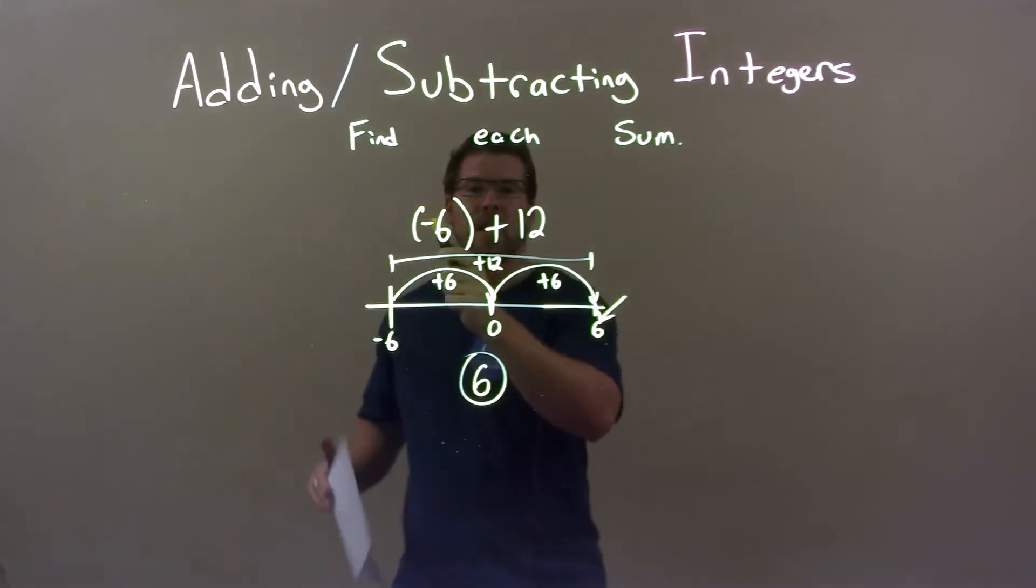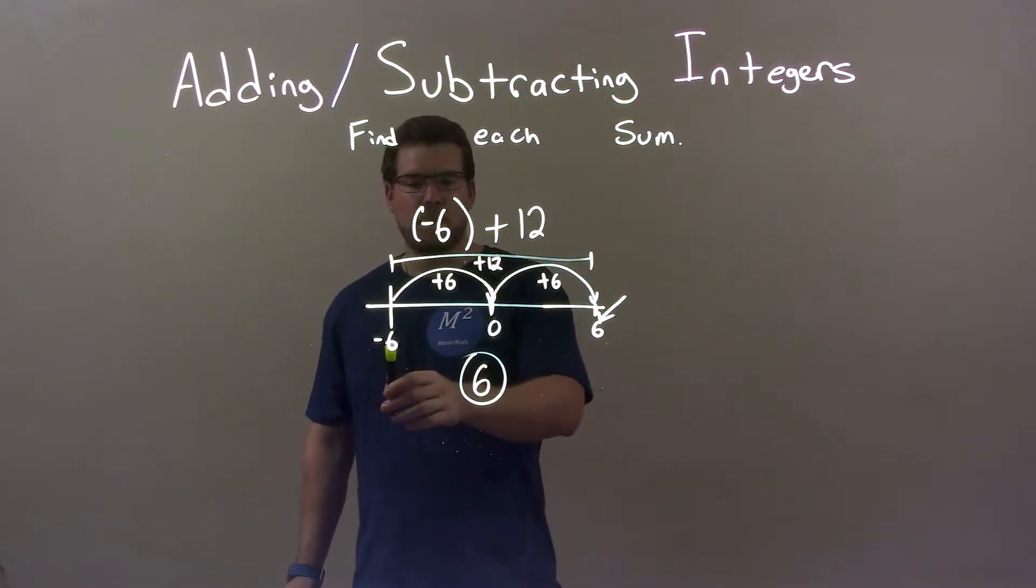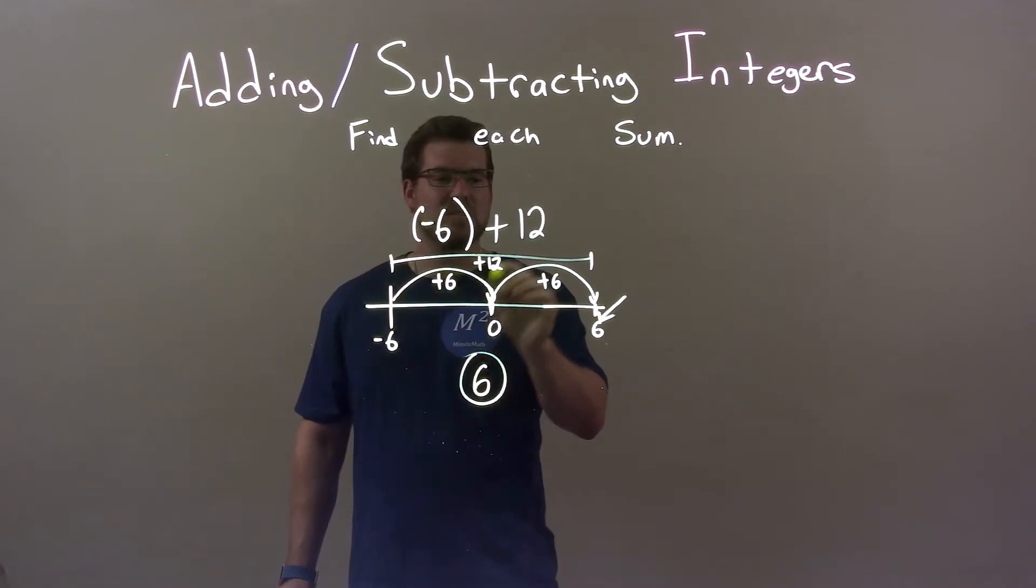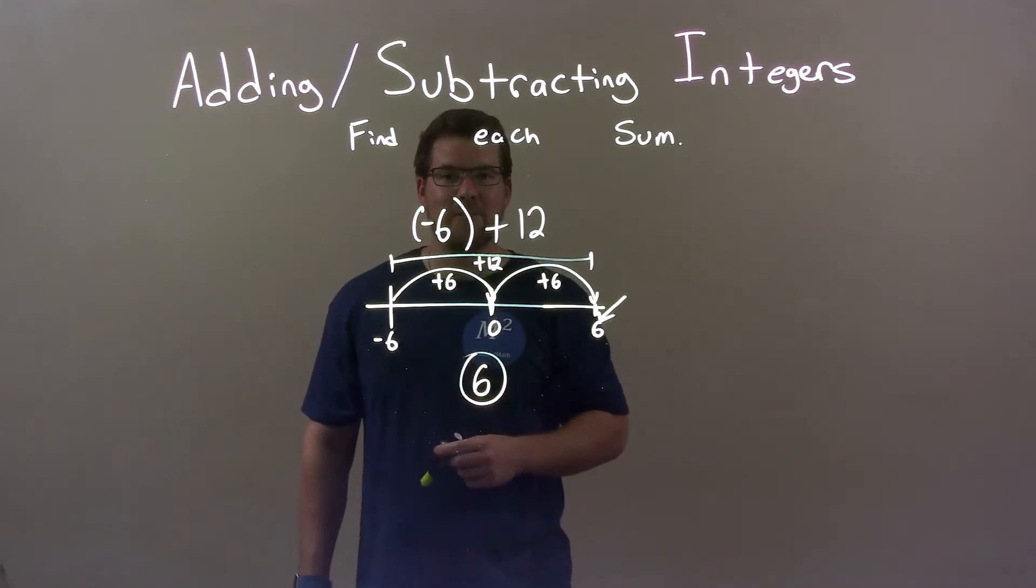Quick recap. We have negative 6 plus 12 and we have to add them together. We start with negative 6 and we broke it down into adding 6 twice, which is a total of 12, which gave us positive 6. So our final answer is positive 6. Thanks.